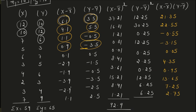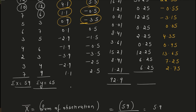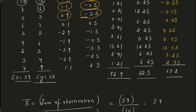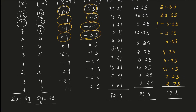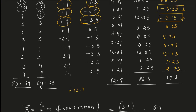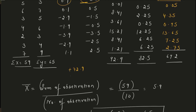We also need to write the summation of y minus ȳ whole squared. When you sum that column, the value is 82.5. And for the last column — the product (x minus x̄)(y minus ȳ) — when you add it up, the value is 69.2. This 69.2 comes by first adding all positive terms, which gives 72.9, then adding the negative terms — minus 3.15 and minus 0.55 — giving minus 3.7. Subtracting gives 69.2.